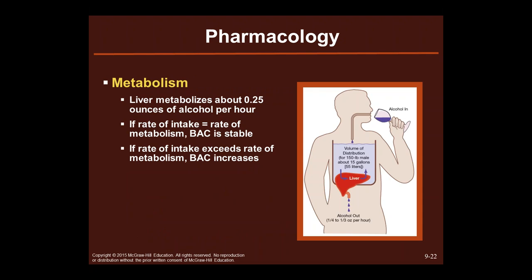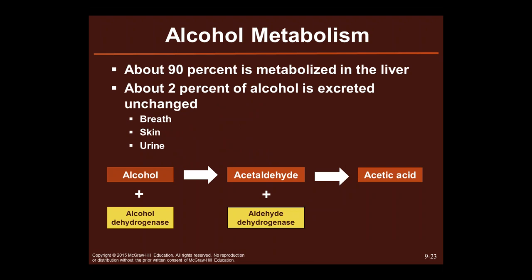Metabolism: the liver metabolizes about 0.25 ounces of alcohol per hour. If the rate of intake equals the rate of metabolism, your blood alcohol concentration is stable. If the rate of intake exceeds the rate of metabolism — which is typically how people drink — your blood alcohol concentration increases. About 90% of alcohol is metabolized in the liver, which is hard on your liver. About 2% of alcohol is excreted unchanged — it comes out in your breath, you sweat it out, you pee it out.